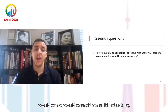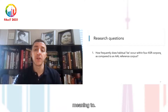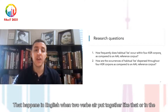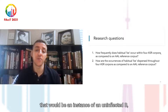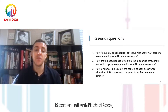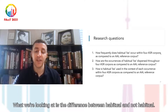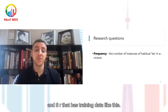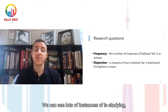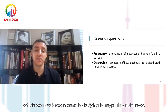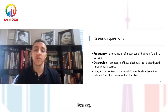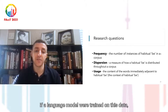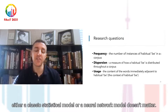Research questions for this study. One: how frequently does habitual B occur within the four ASR corpora as compared to an AAL reference corpus? Two: how are the occurrences of habitual B dispersed throughout the four ASR corpora as compared to an AAL corpus? Three: how is habitual B used in the context of each occurrence within the four ASR corpora as compared to an AAL reference corpus? Frequency means the number of instances of habitual B. Dispersion is a measure of how habitual B is distributed throughout a corpus, whether it shows up in different files. And usage is the content of words immediately adjacent to habitual B, which is important for bigrams, trigrams, and other n-gram models.